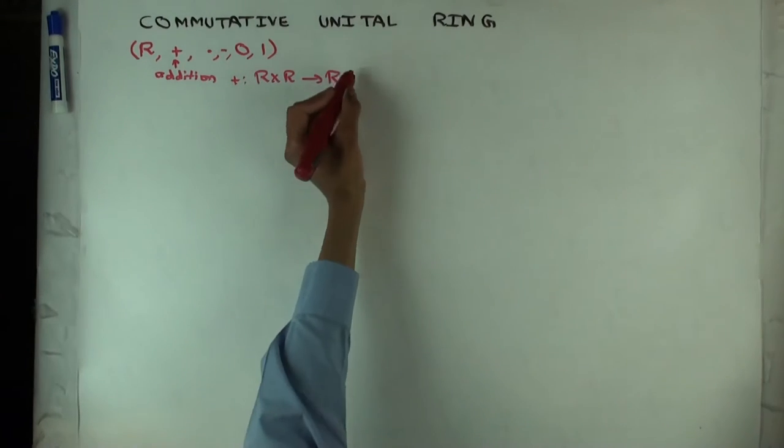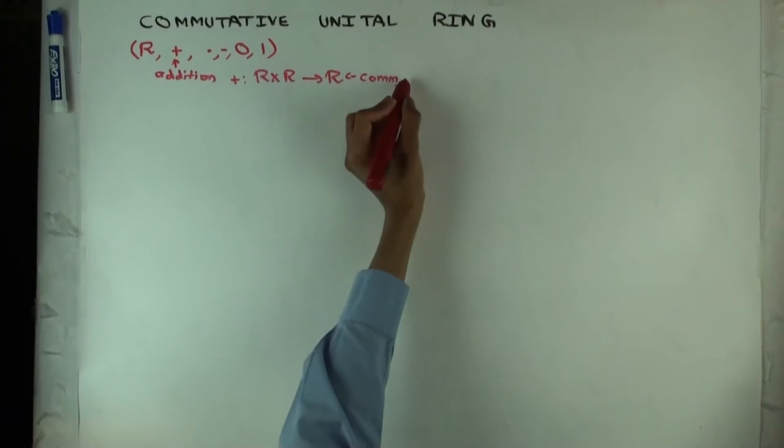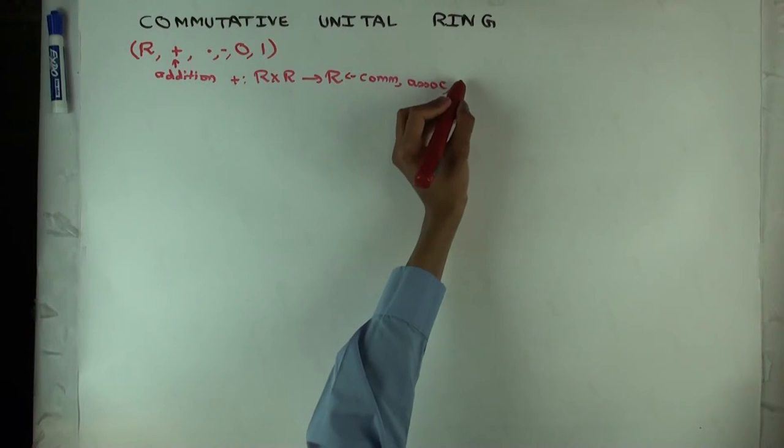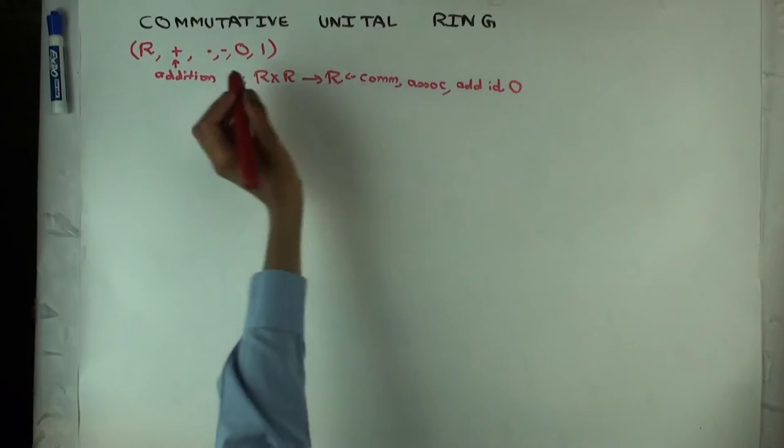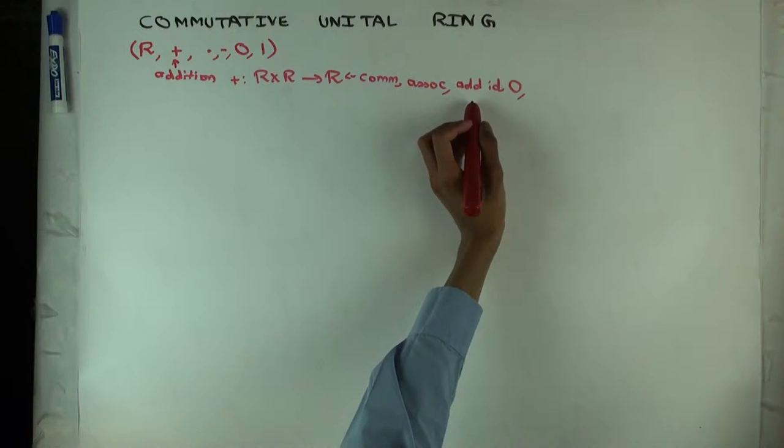This satisfies some conditions. So it's commutative, I want to write full words: commutative, associative. It has an additive identity, which is called zero. So zero is an element of the ring, which is an identity both ways. And additive inverse.